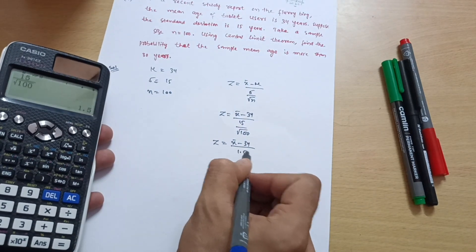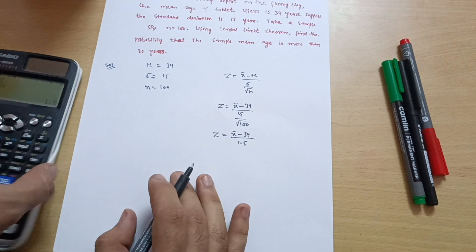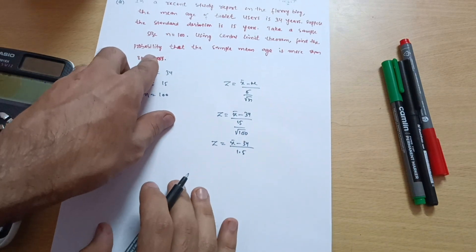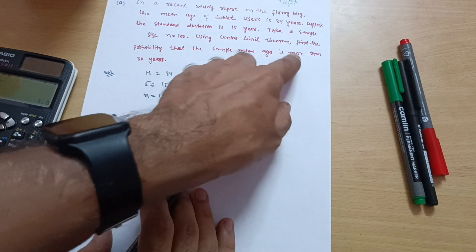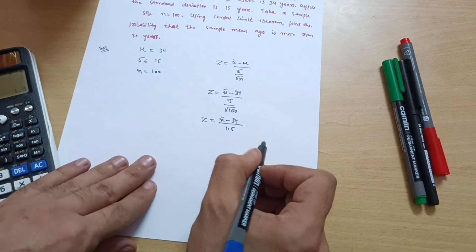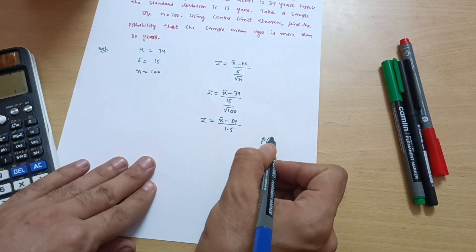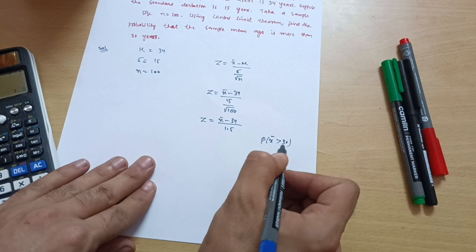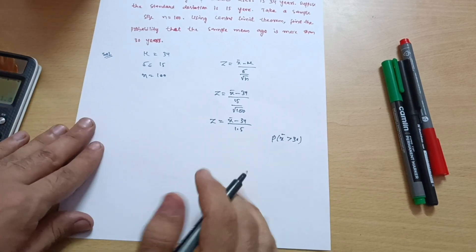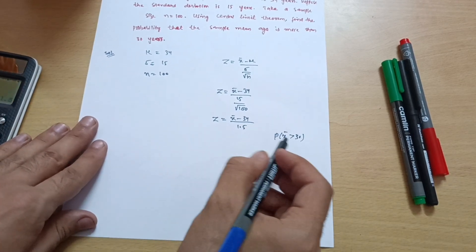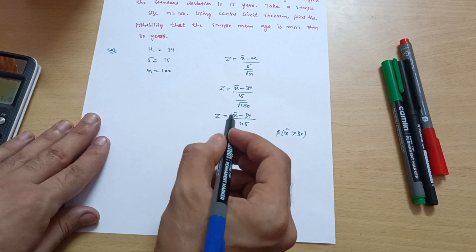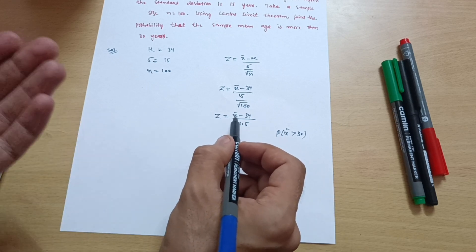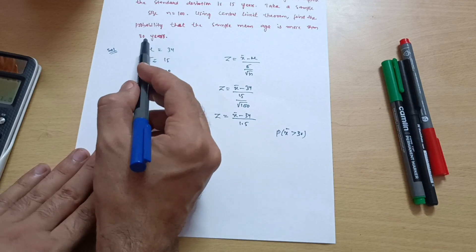See here, find the probability that the sample mean age is more than 30 years. That means probability of x̄ greater than 30. This is the representation of this probability. We have to calculate this one. So for this particular calculation of probability, we should put the value of x̄ as 30 over here.